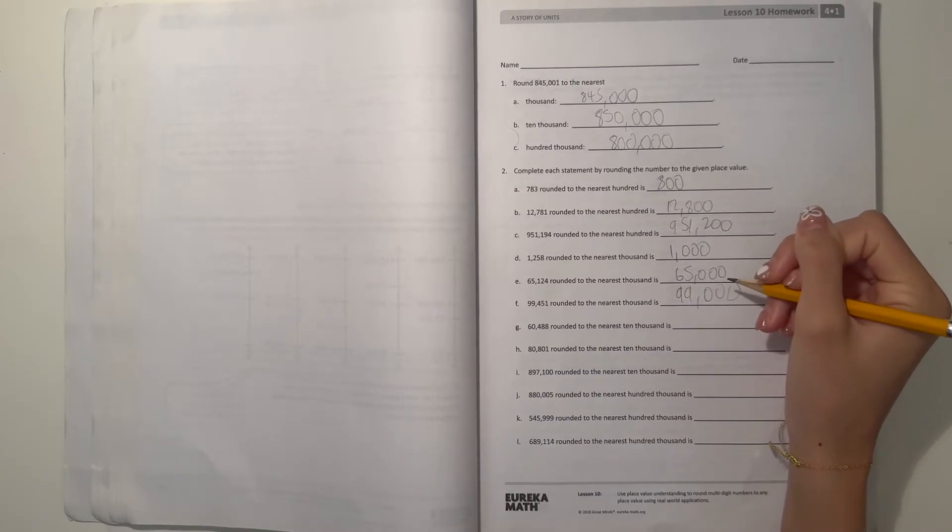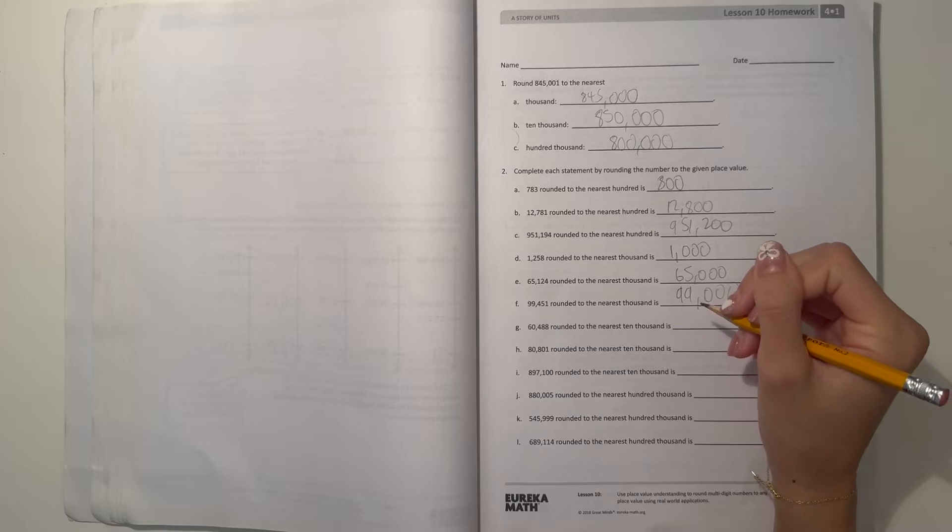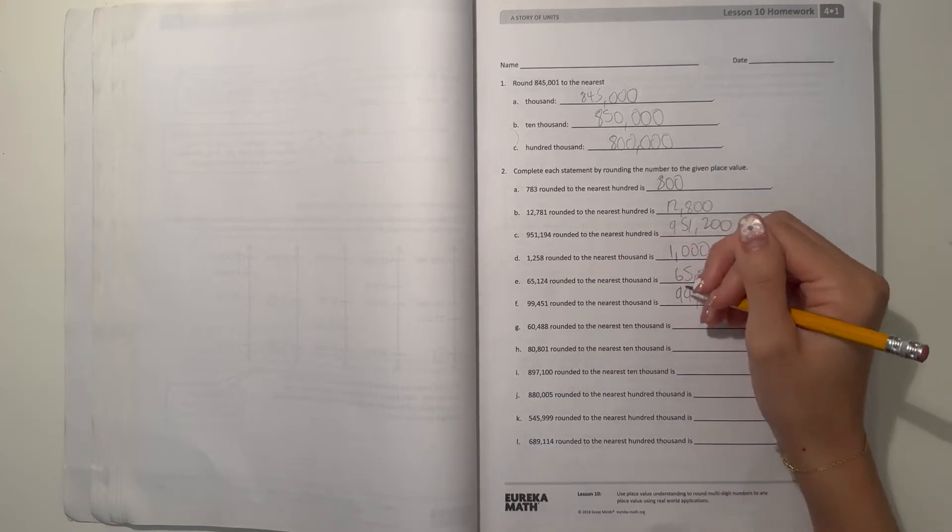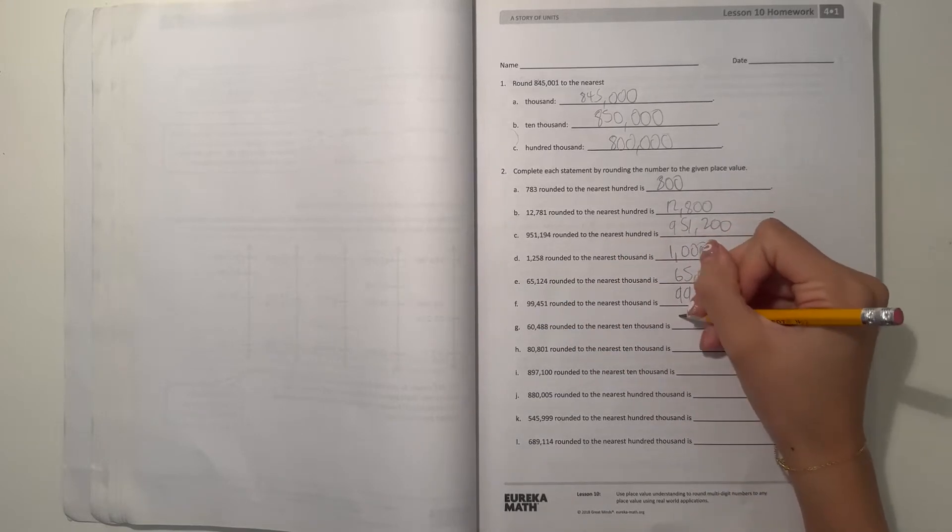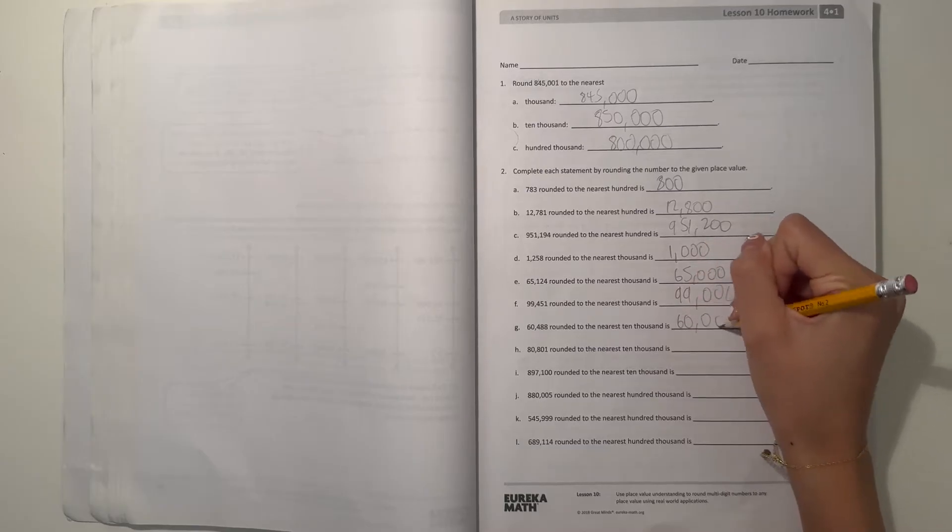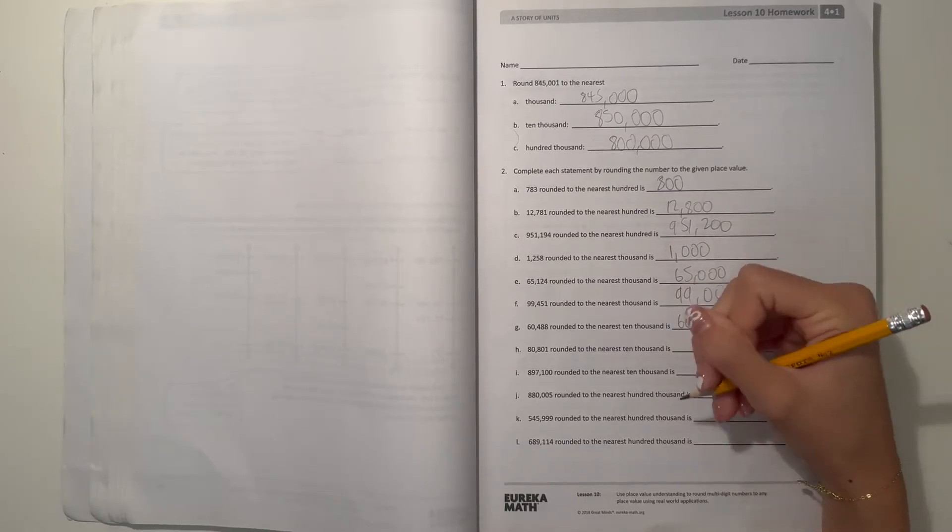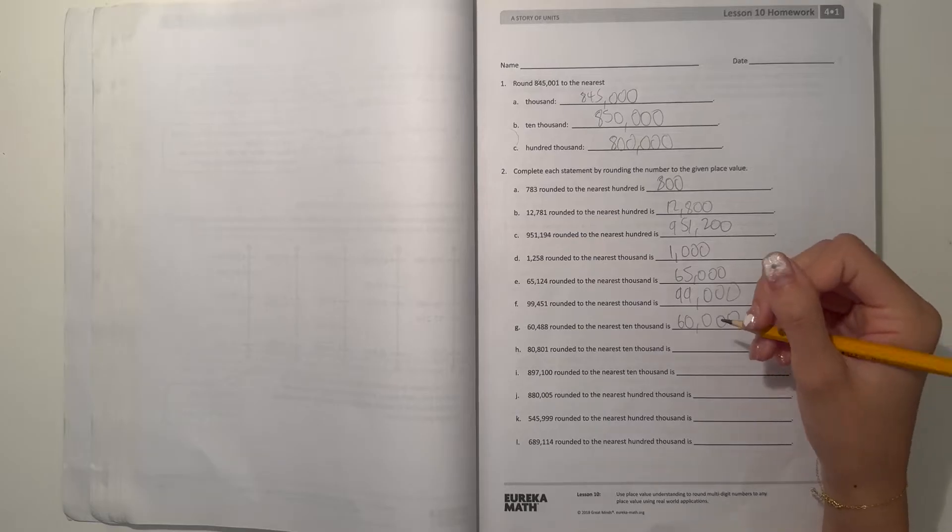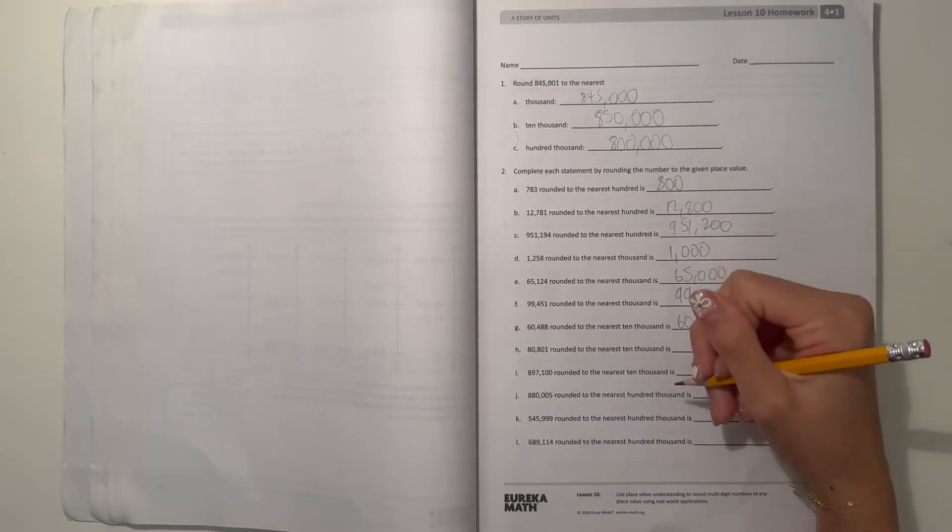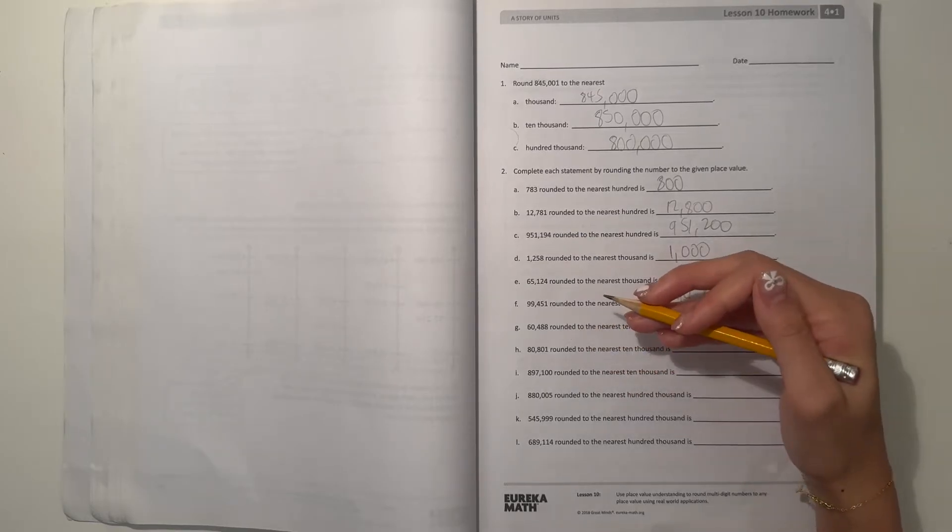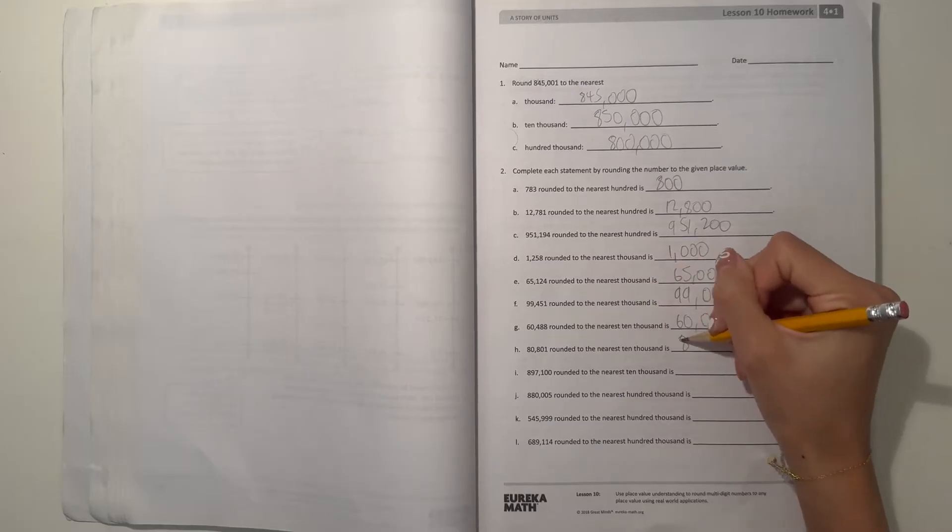And G, 60,488 to the nearest 10,000, which is this one, that would just be 60,000. 80,801 to the nearest 10,000, it would be 80,000.